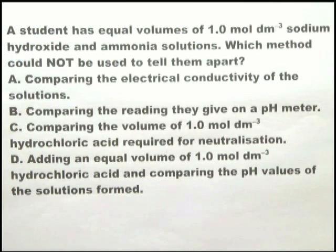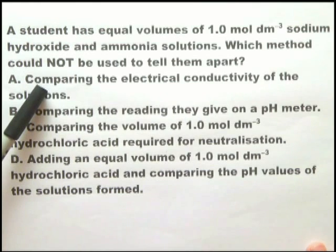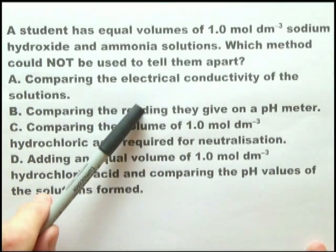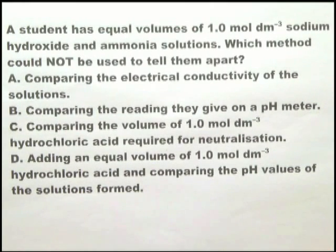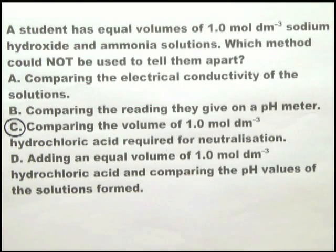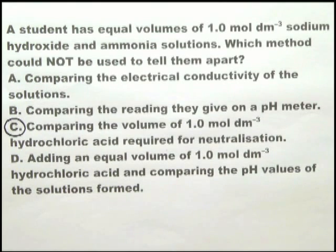This is exactly the same question as the previous one, except instead of using a strong acid and a weak acid, we are using a strong base and a weak base, and the answers are the same. Comparing electrical conductivity: you can tell them apart. Comparing pH meter readings: different readings. Comparing the volume of hydrochloric acid required for neutralization: they require the same volume, so this cannot be used to tell them apart. Adding an equal volume of 1 mol dm⁻³ HCl and comparing pH values: adding HCl to NaOH creates sodium chloride — neutral, pH 7. Adding HCl to ammonia creates ammonium chloride, which is acidic. So comparing pH values tells them apart. The answer is C.